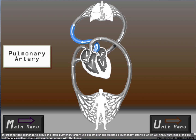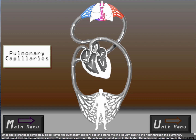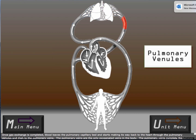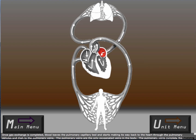In order for gas exchange to occur, the large pulmonary artery will get smaller and become a pulmonary arteriole, which will finally turn into a one-cell pulmonary capillary, where gas exchange occurs with the lungs. Once gas exchange is completed, blood leaves the pulmonary capillary bed and starts making its way back to the heart through the pulmonary venules and then to the pulmonary veins. The pulmonary veins are the only oxygenated veins in the body, and they complete the pulmonary loop as blood is dumped into the left atrium.